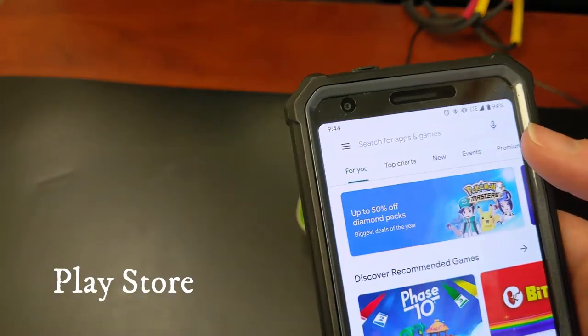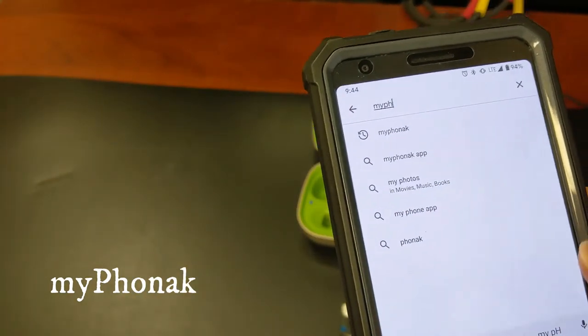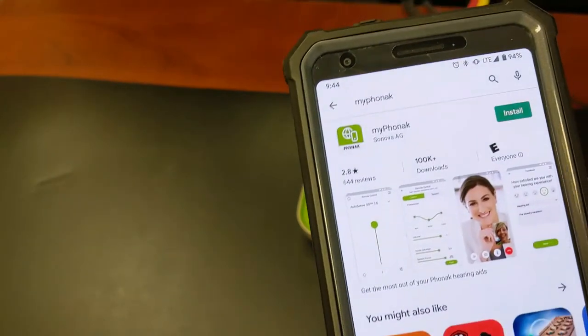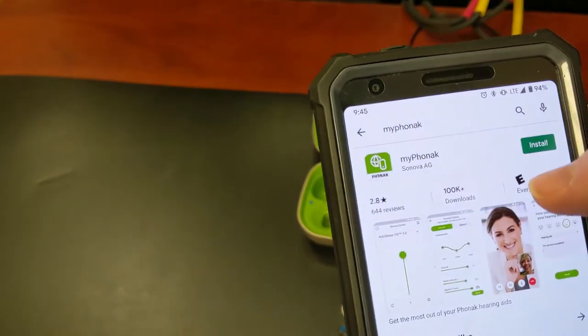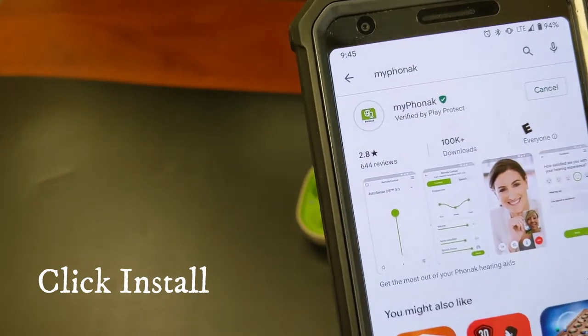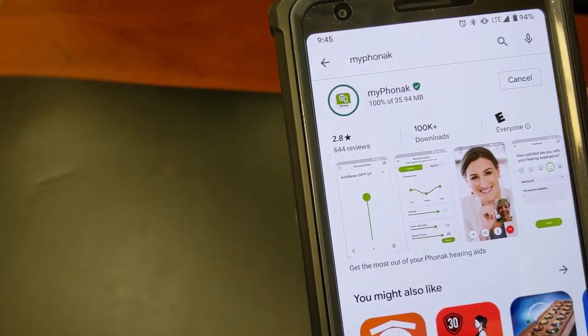You'll go to the Play Store and type My Phonak into the search box and we'll hit search. This is what we're looking for, the My Phonak app. I'm going to install that. It'll take just a couple minutes to download and install.